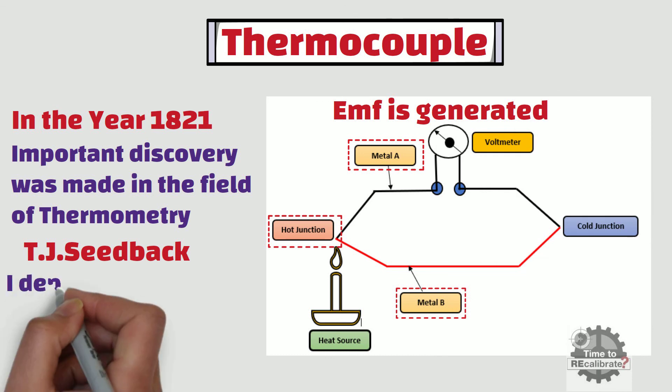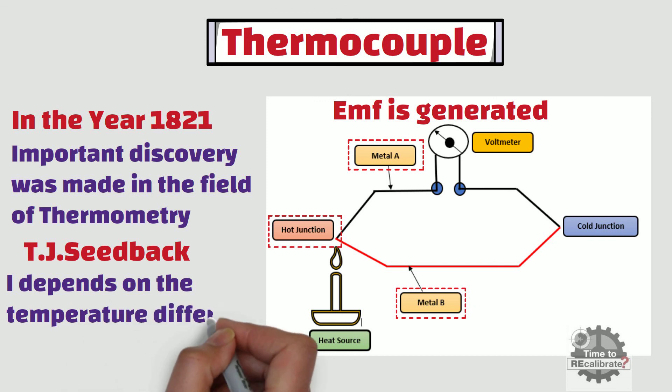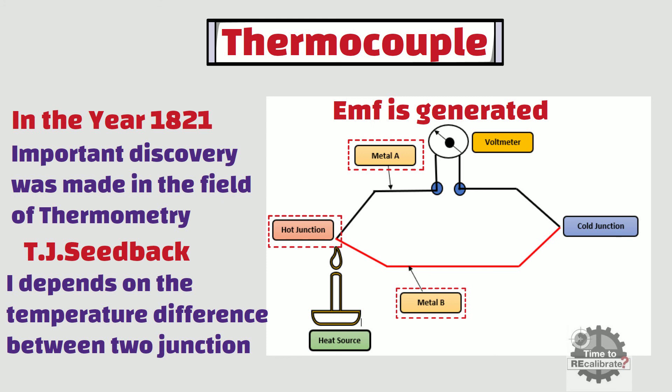The amount of electric current flowing in the loop depends on the temperature difference between two junctions. So if the temperature of one junction is kept at a known value, the temperature of the other junction can be determined by the amount of voltage produced. This discovery resulted in the temperature sensor we know as the thermocouple.